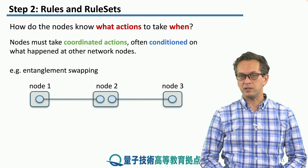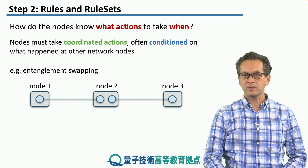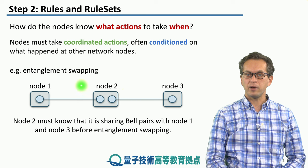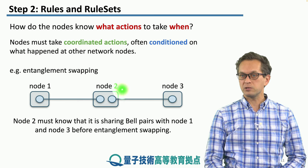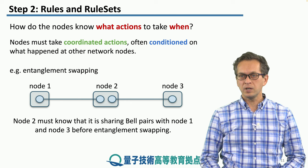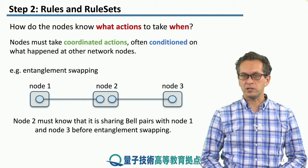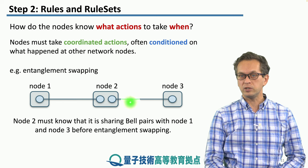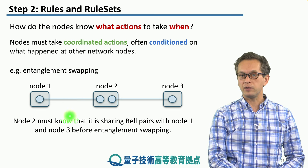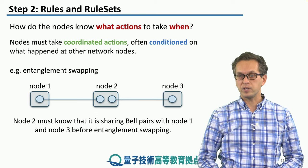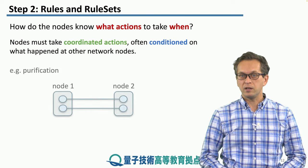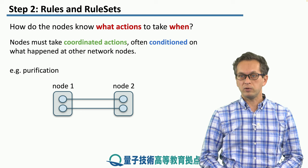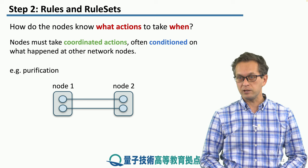For example, in entanglement swapping, node B in the middle first needs to know that it's sharing a bell pair with node 1 and also sharing a bell pair with node 3. So it's waiting for confirmation either from a BSA somewhere between node 1 and node 2, and node 2 and node 3, or from node 1 and node 3 themselves, depending on the link architecture. Another example is purification or error detection, where both nodes need to know that they are sharing two or at least two entangled pairs.